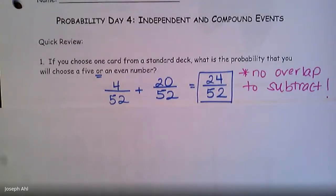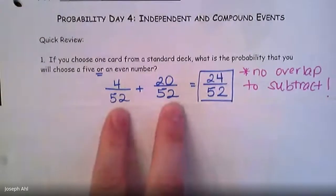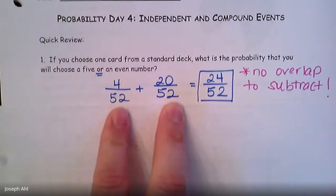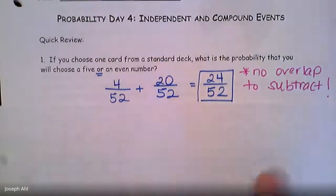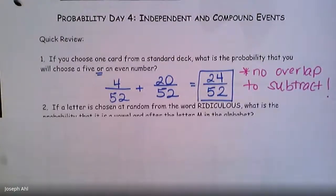Remember, for an 'or' question, if there's any overlap between the two groups — if there was a card that was both five and even at the same time — you would subtract that out. But there is no overlap between those two groups, so you purely just add those two things together.